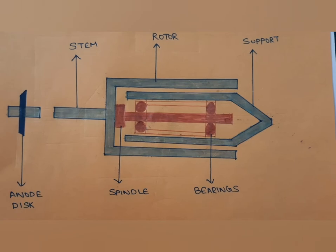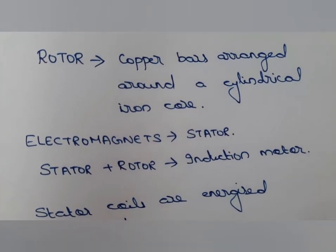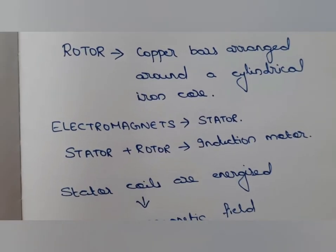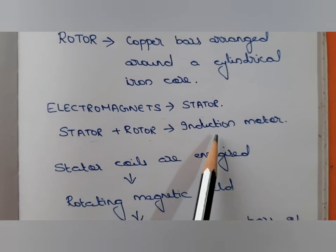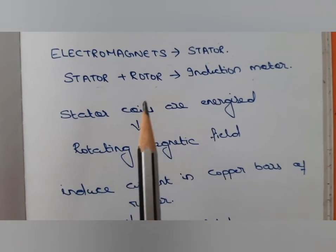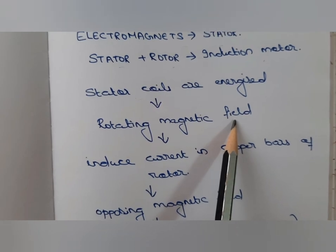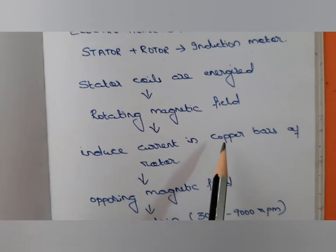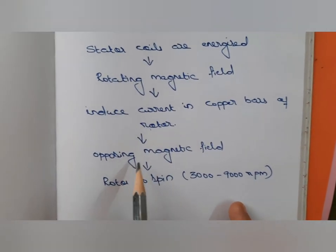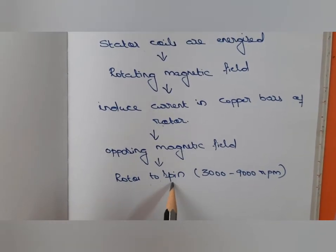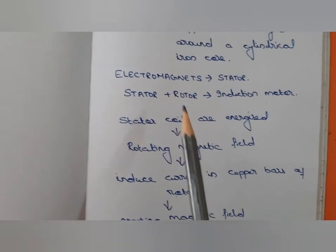The rotor consists of copper bars arranged around a cylindrical iron core. Surrounding the rotor, outside the glass envelope, are electromagnets known as stators. The stator and rotor together act as an induction motor. When the stator coils are energized, a rotating magnetic field is produced, which induces current in the copper bars of the rotor. This induced current produces an opposing magnetic field, enabling the rotor to spin at about 3000 to 9000 rotations per minute.